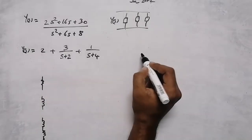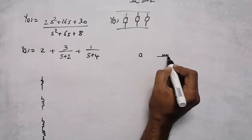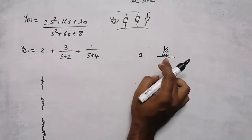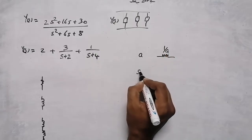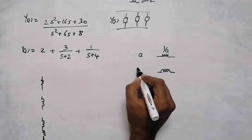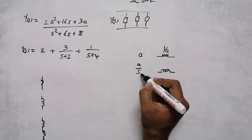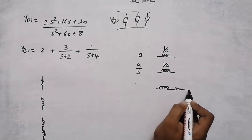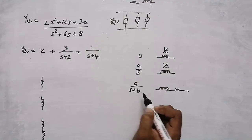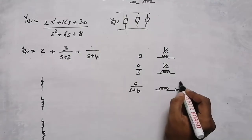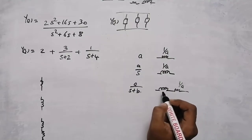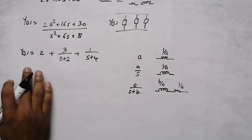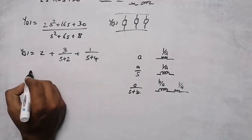For a constant term in Y(s), it represents a resistor and the value is the inverse of that constant. If s is in the denominator, it is an inductor with value 1/a. For a combination term of the form a/(s + b), the resistor value is 1/a and the inductor value is b/a.